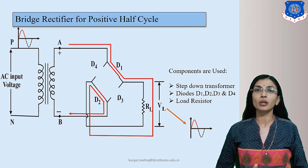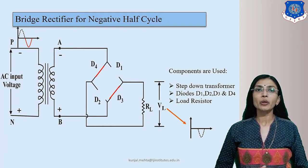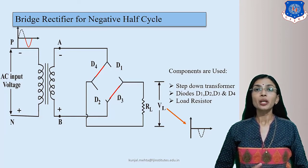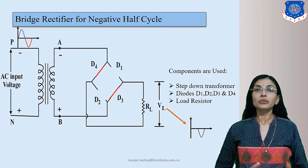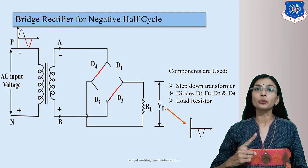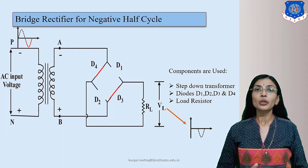Now let's discuss the bridge rectifier for the negative half cycle, which is case 2. When the negative half cycle arrives at the input, terminal A becomes negative and terminal B becomes positive. Therefore the diode biasing condition is reversed: D1 and D2 will be reverse biased and D3 and D4 will be forward biased. D1 and D2 will be open switch, and D3 and D4 will be closed switch.